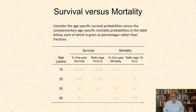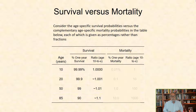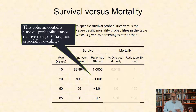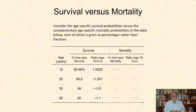Consider the age-specific survival versus the complementary age-specific mortality probabilities in this table, each given as percentages rather than fractions. The first column has ages 10, 20, 50, and 85 years. The one-year probability of survival for each of these ages is 99.99%, 99.9%, 99%, and 90% respectively. The ratios of these probabilities relative to age 10 are all roughly 1, meaning differences in survival reveal little about actuarial differences across these ages.